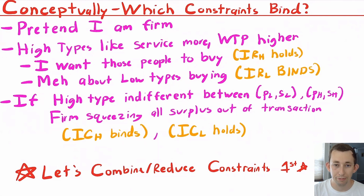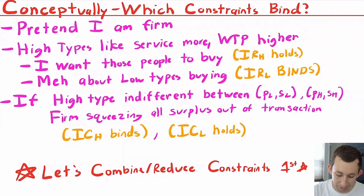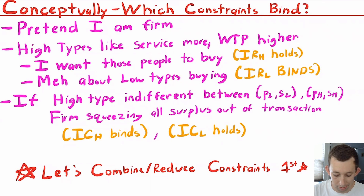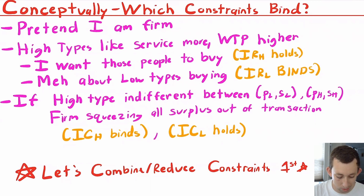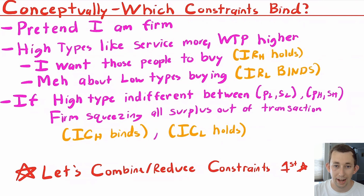So the IC constraint for the high type should bind — the high type should just barely want to reveal their type, maybe receiving a small discount to do so. The IC constraint for the low type should hold strictly — we don't want low types to be tempted toward the high package, because if they were, it would mean the high package is too good and we should adjust it to less storage for more price. Going through this conceptually helps us figure out which constraints bind versus which just hold.